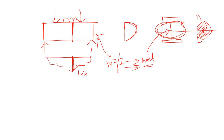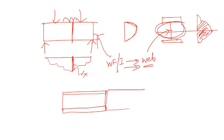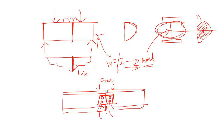So if you have a beam splice and you notice that only the web is connected through a plate and bolt system — the flanges are completely free and not connected — then this is definitely a shear splice, because only the shear force is being transferred.